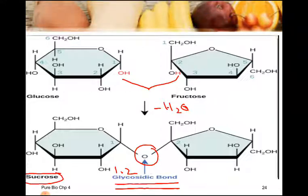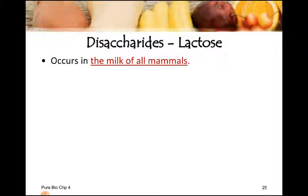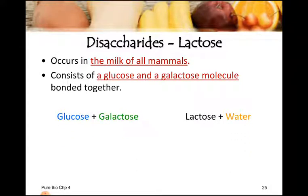The next example is lactose, which is also called milk sugar, because lactose is a disaccharide that occurs in the milk of all mammals. The sweet taste in mammalian milk is due to lactose. Lactose consists of a glucose and a galactose molecule: glucose plus galactose gives lactose plus water. Again, this is a condensation reaction.